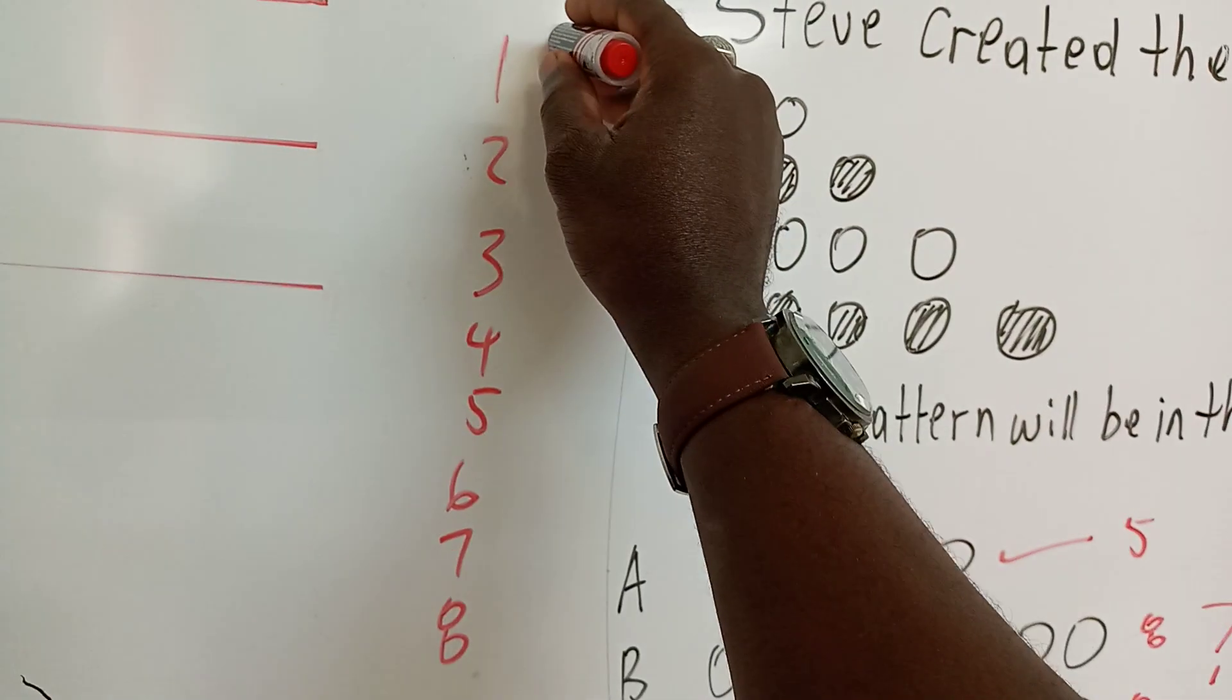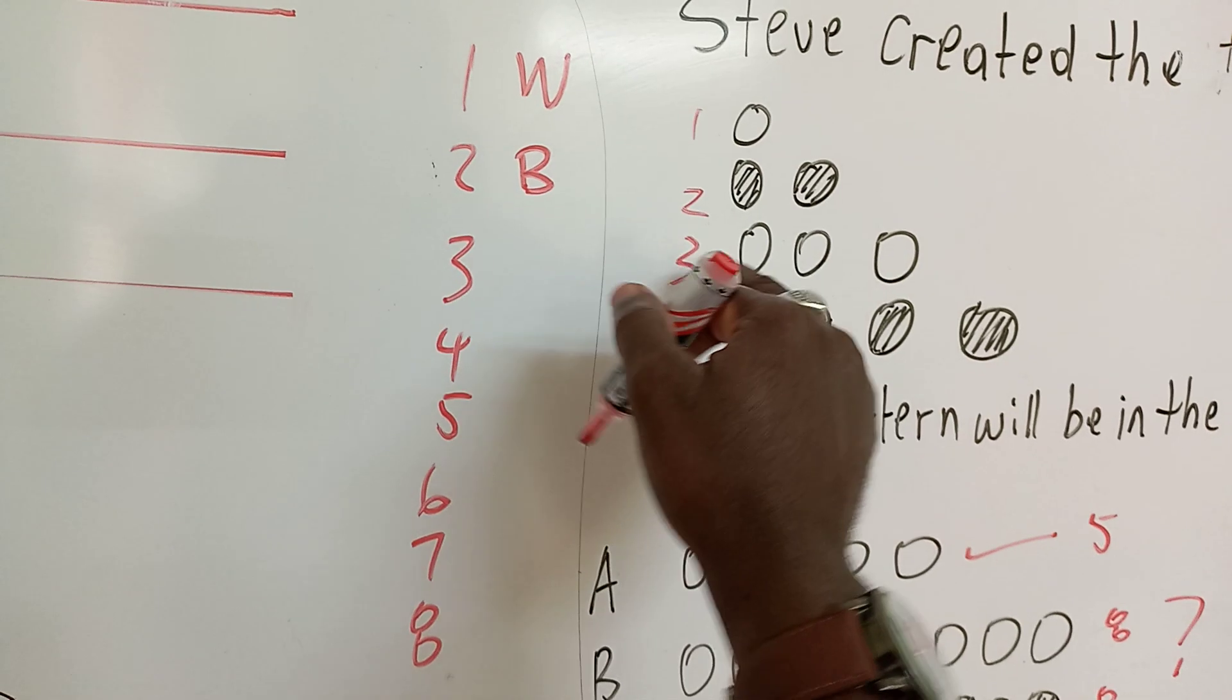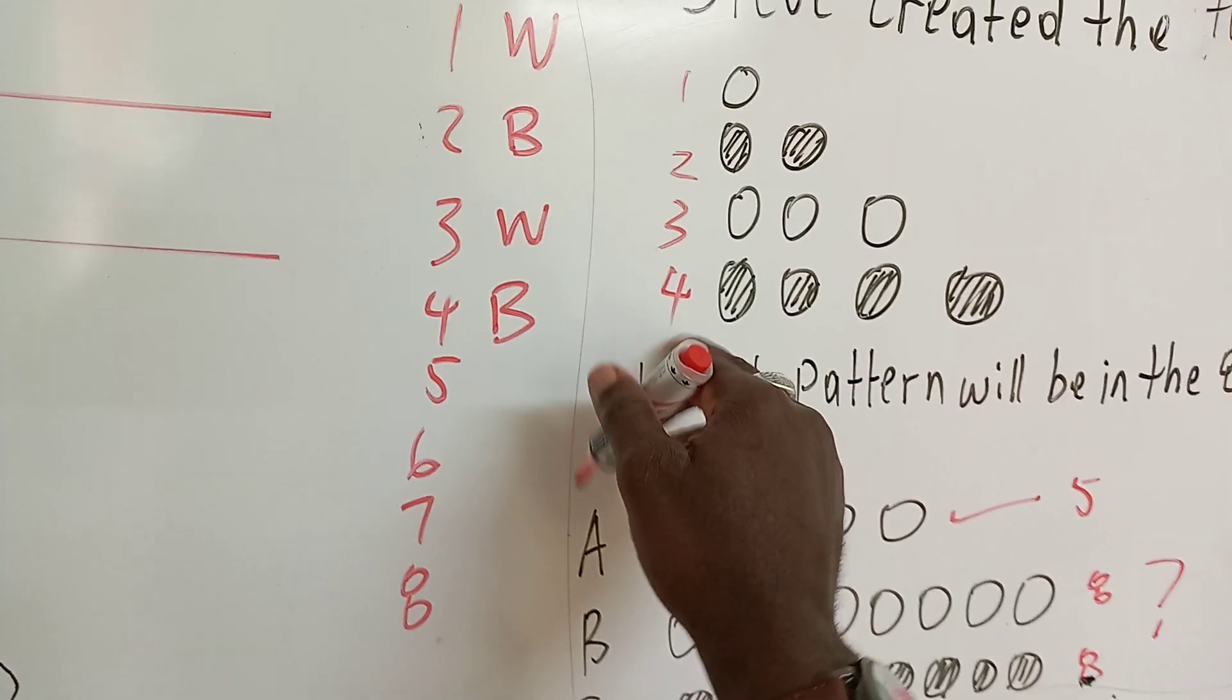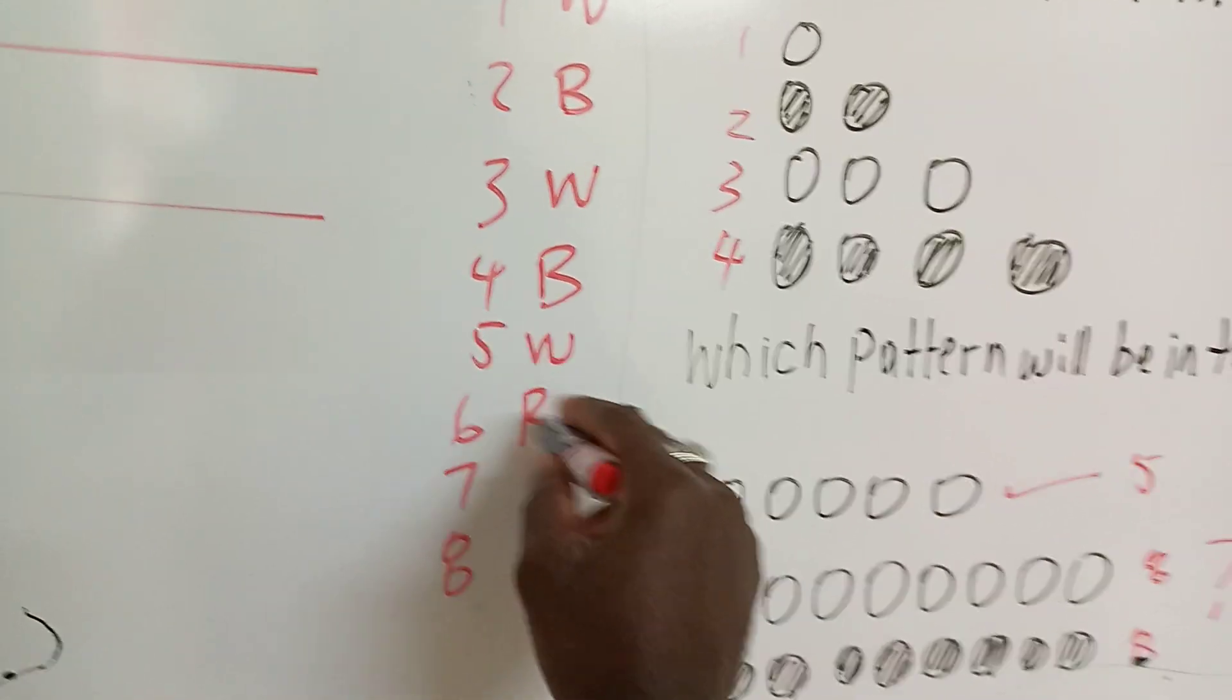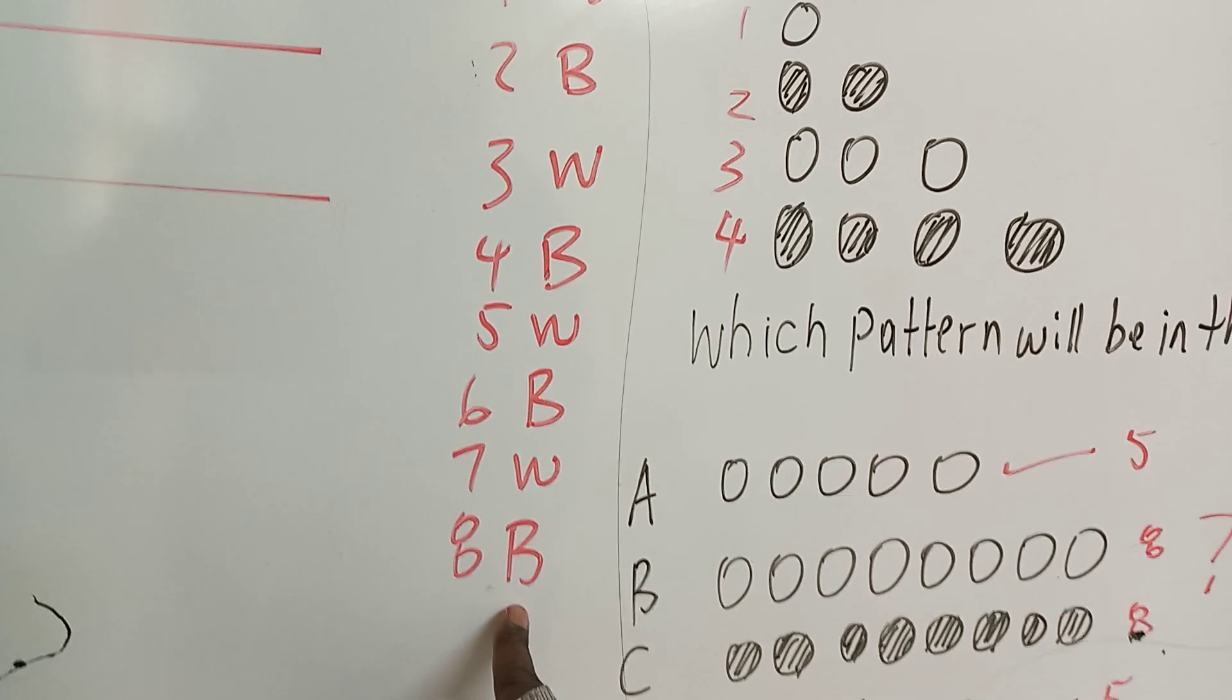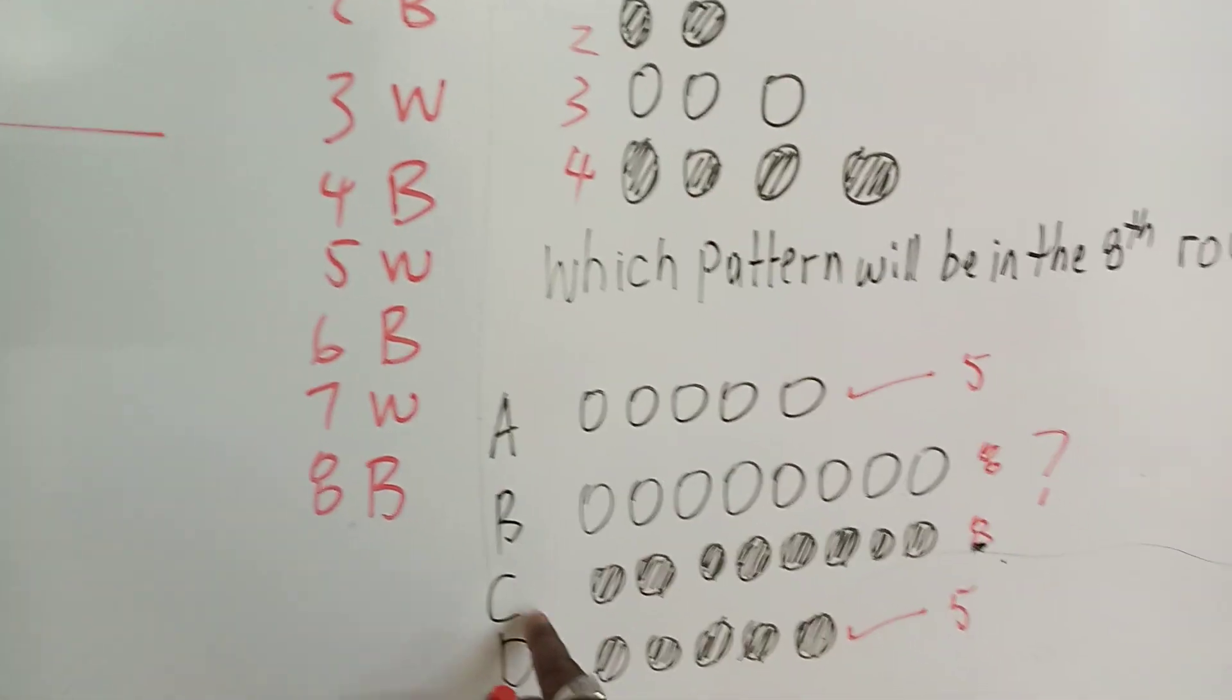Because we see the first, we have white. The second, we have black. In the third, we have white. In the fourth, we have black. So we see, it's a white, black thing. It seems to be a white, black thing. So in the eighth position, we should have what? Black. The color black. So it's going to be C.